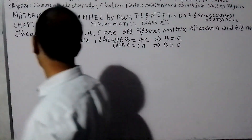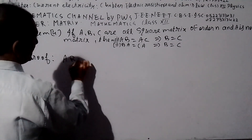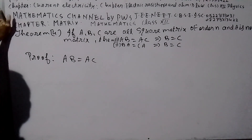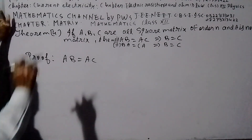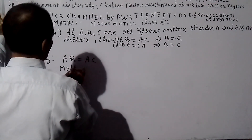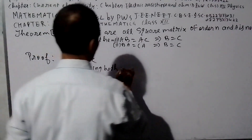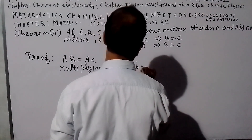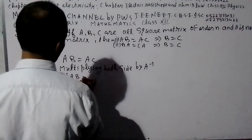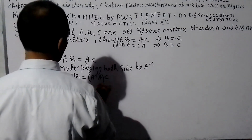AB = AC. Multiplying both sides by A inverse — pre-multiplying both sides by A inverse. A inverse into A, B is equal to A inverse into A, C. Since A inverse·A = I, we get I·B = I·C, therefore B = C.